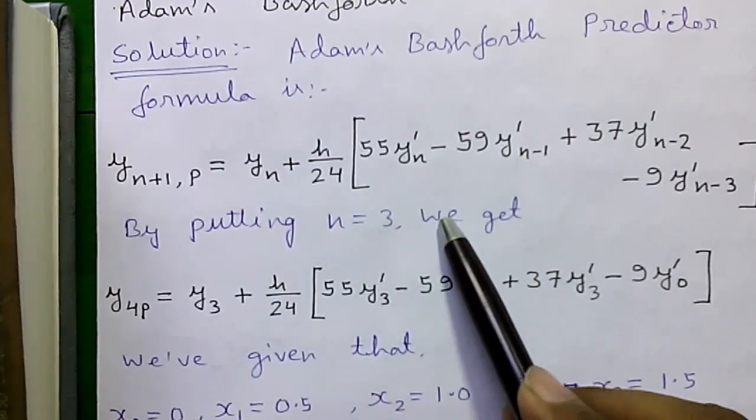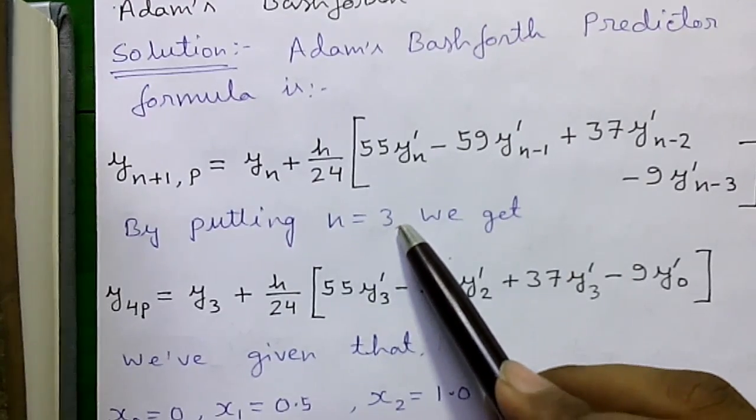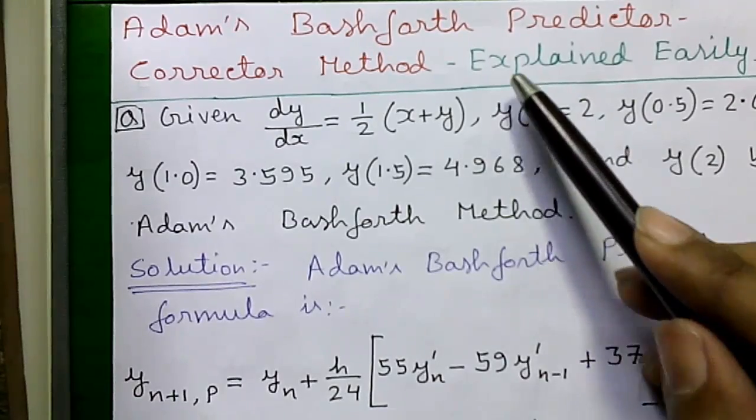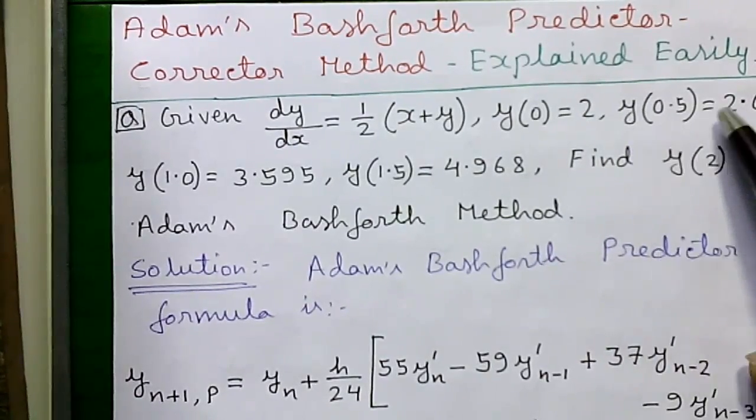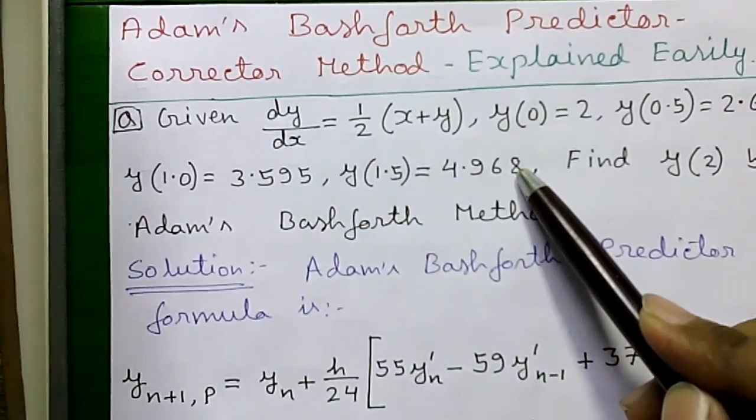So by putting n equals to 3 we will get this simplified formula. Here n equals to 3 because other than the first value we have three other values of y: y first value, second value and third value. So n equals to 3.